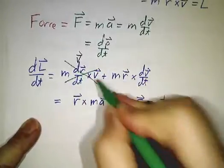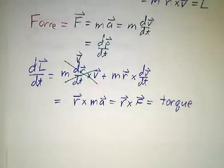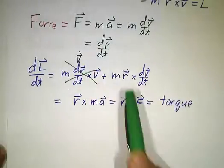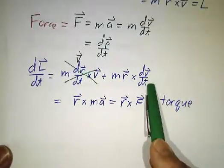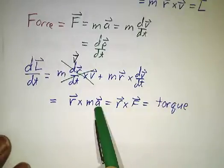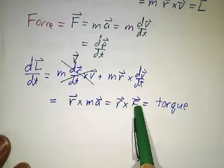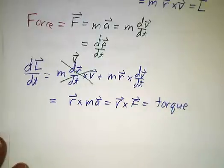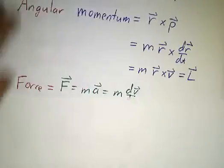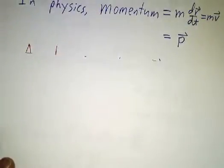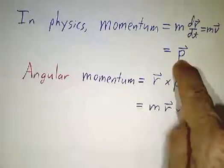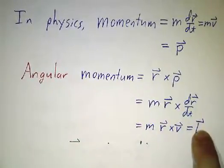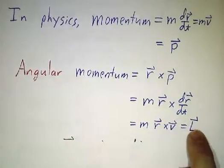But dr/dt is just v, and v cross v is zero — any vector crossed with itself is zero, since they point in the same direction. So we're left with m times r cross the derivative of v. The derivative of v is the acceleration, and mass times acceleration is force. So we get r cross force — and that's called the torque. For ordinary momentum, you change it by applying a force; for angular momentum, you change it by applying a torque.